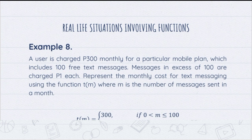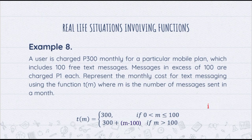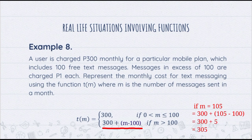For the second sentence, for messages in excess of 100 there is a charge of 1 peso each, so our second function is T of M equals 300 plus (M minus 100) if M is greater than 100. For example, if you use 95, 90, or 85 messages in a month, you pay exactly 300 pesos. However, if you send 105 messages, you pay 300 plus (105 minus 100) equals 305 pesos that month.